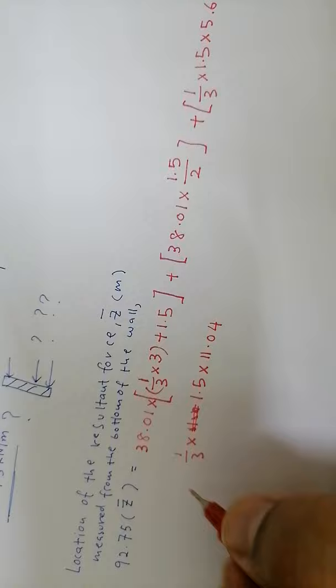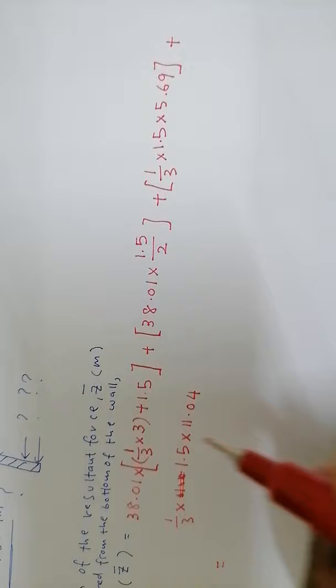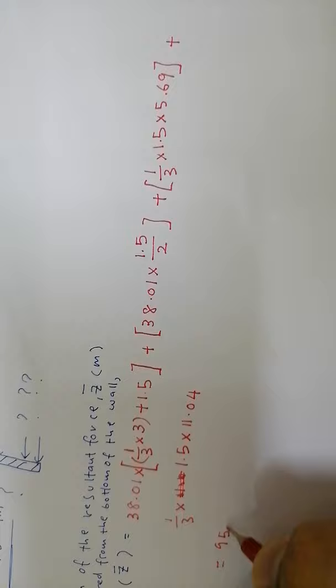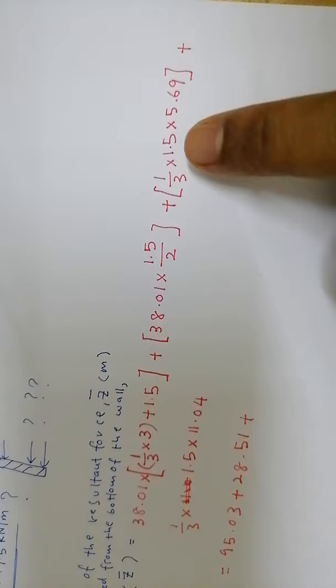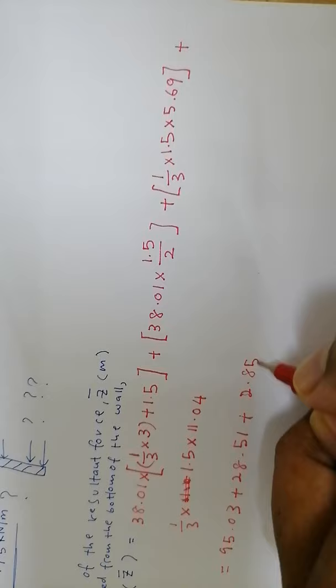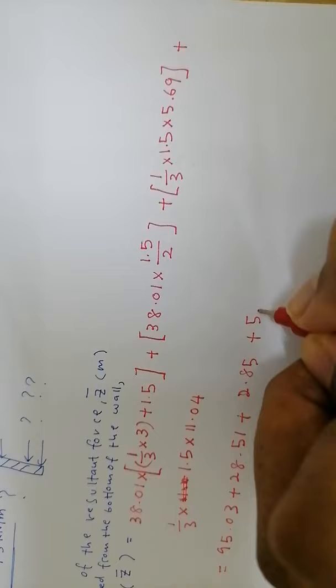Then we do the math here. The result for shape one is 95.03. Shape two gives 28.51. Shape three gives 2.85. And the last one gives 5.52.